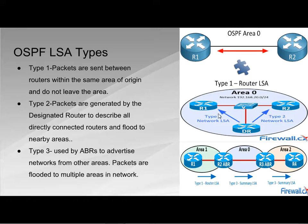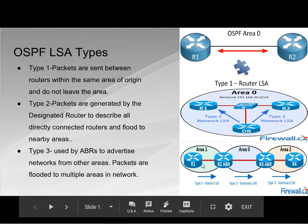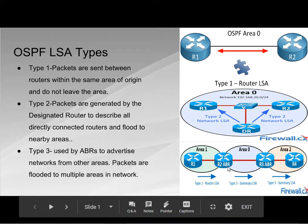Type 3 link state advertisements are used by area border routers to advertise networks from other areas. As you can see from the diagram, the arrows indicate that packets are being flooded to multiple areas in the network — routers 2, 3, and 4.